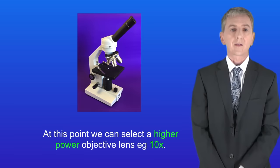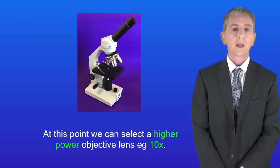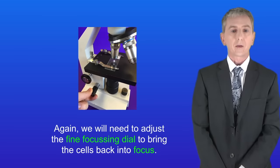At this point we can select a higher power objective lens, for example 10 times. Again we'll need to adjust the fine focusing dial to bring the cells back into focus.